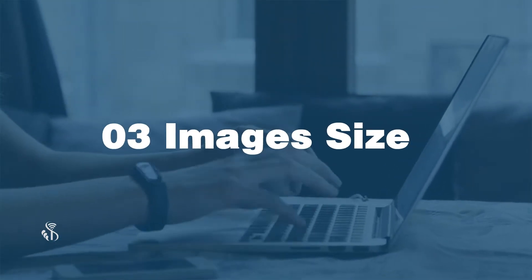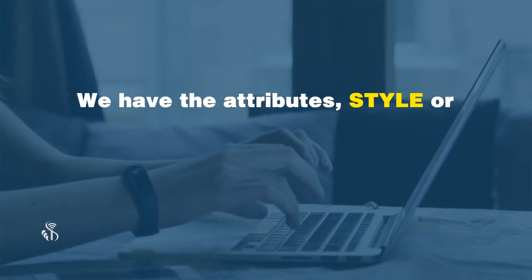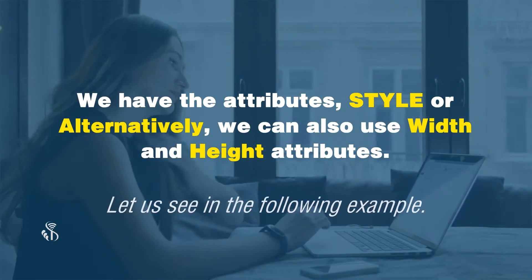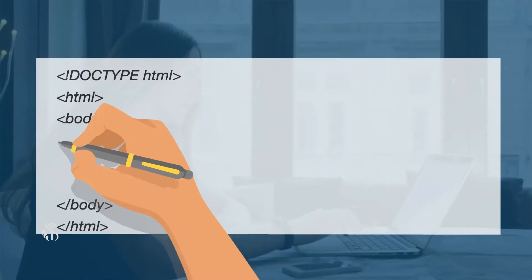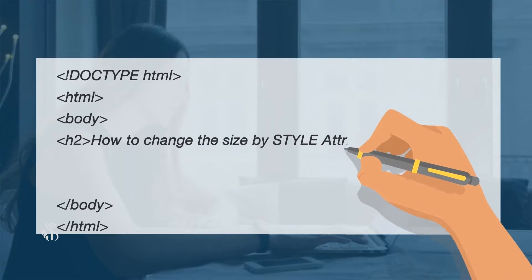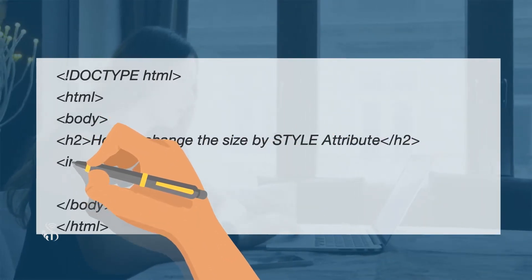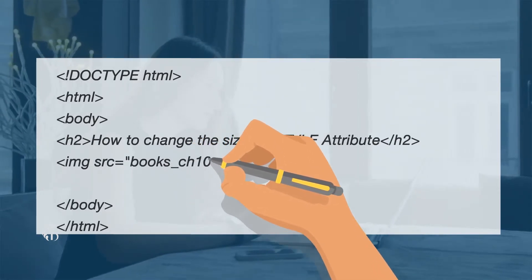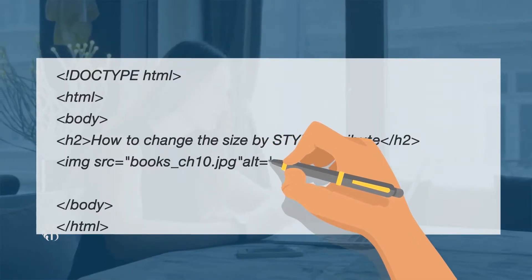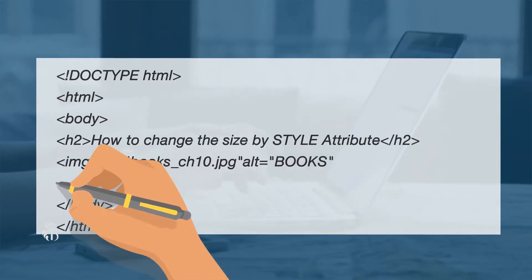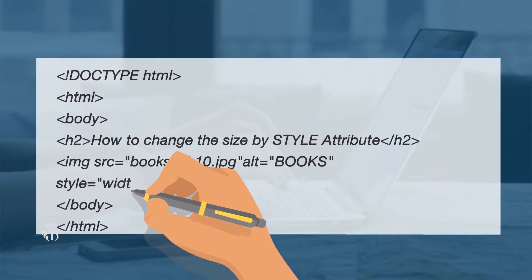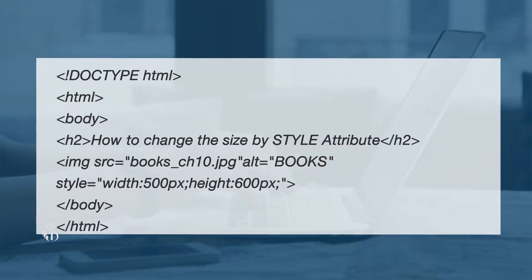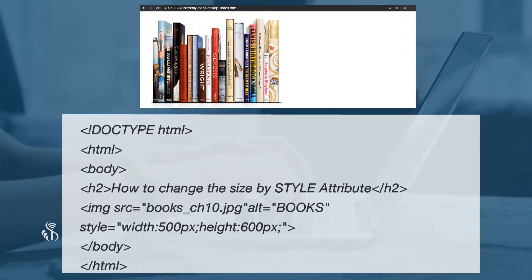Images size — how to adjust the width and height of an image. We have the style attribute, or alternatively we can use width and height attributes. Example: Heading 2 — how to change the size by style attribute. Image source equals 'books_chapter10.jpg', alt equals 'books', style equals 'width: 500px; height: 600px'. The output is as shown in the video.